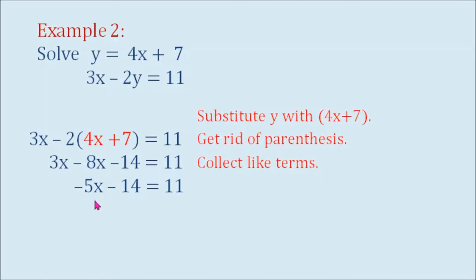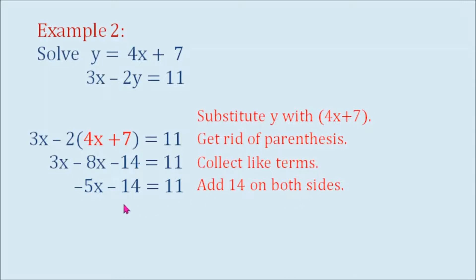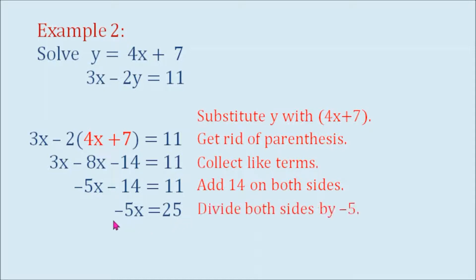So we have negative 5x minus 14 equals 11. Then we are going to add 14 on both sides, so that becomes negative 5x equals 25. Dividing both sides by negative 5, x equals negative 5.